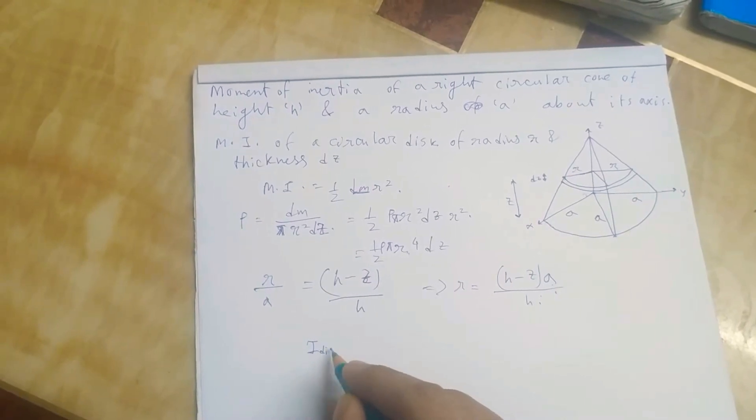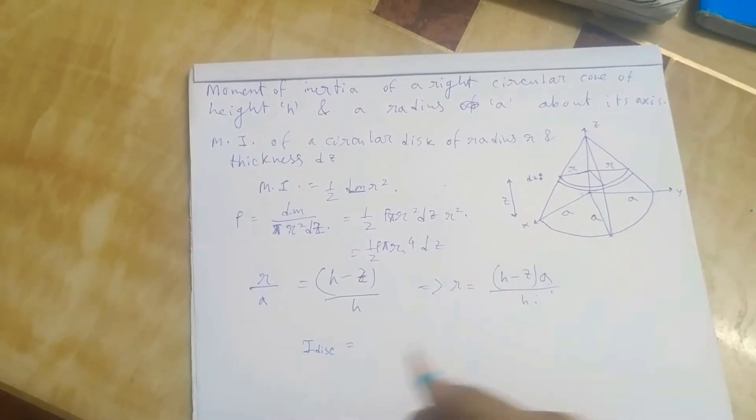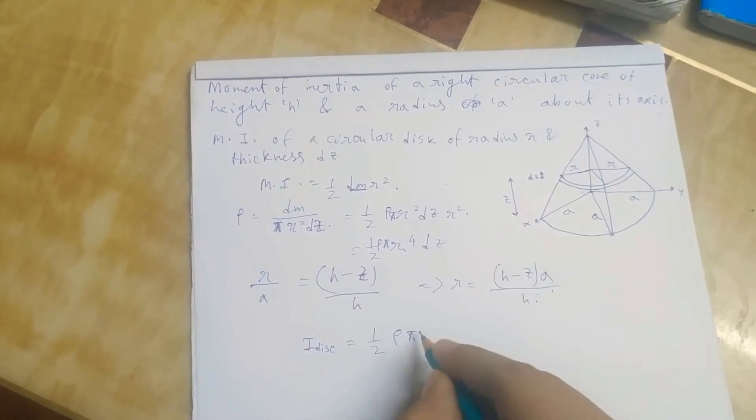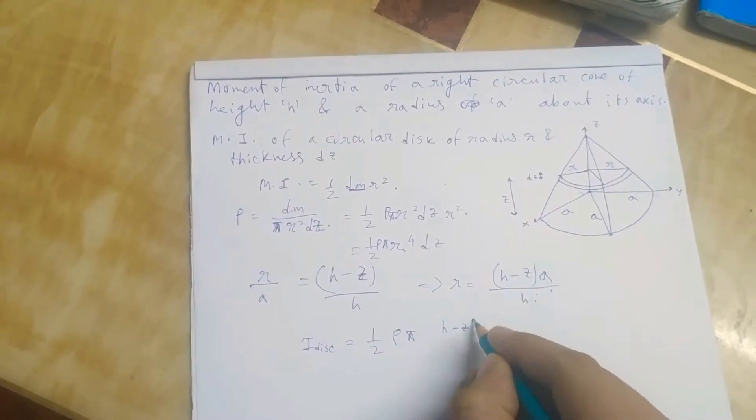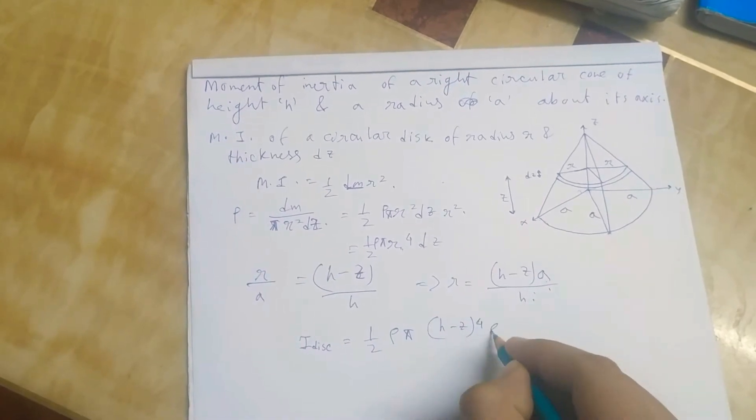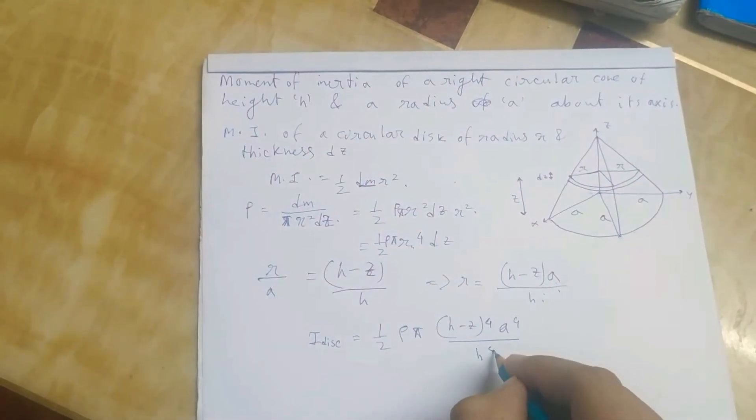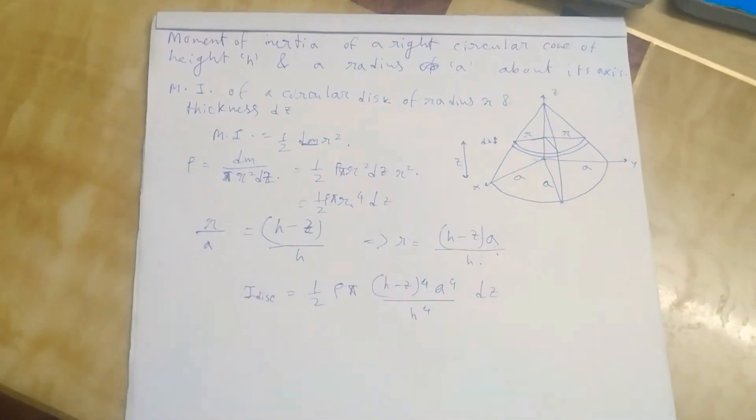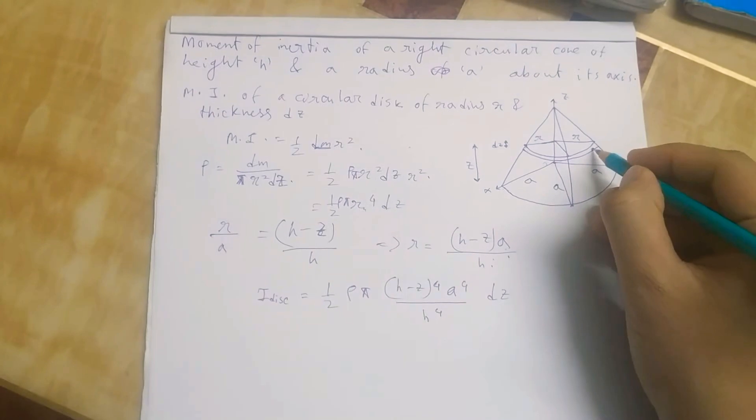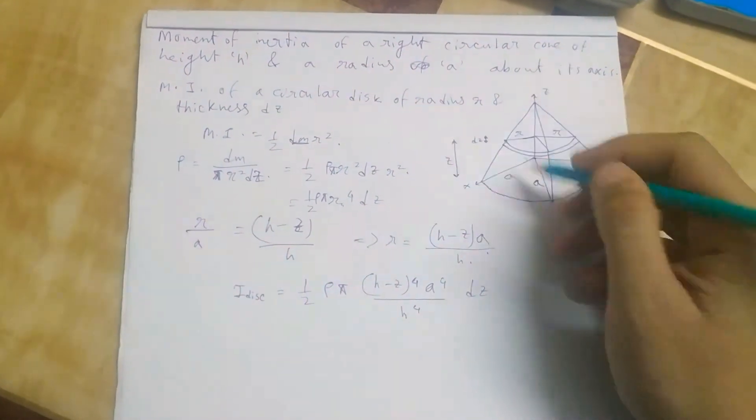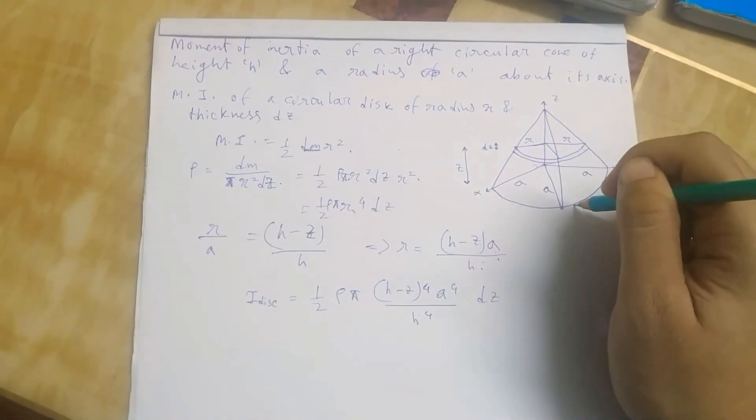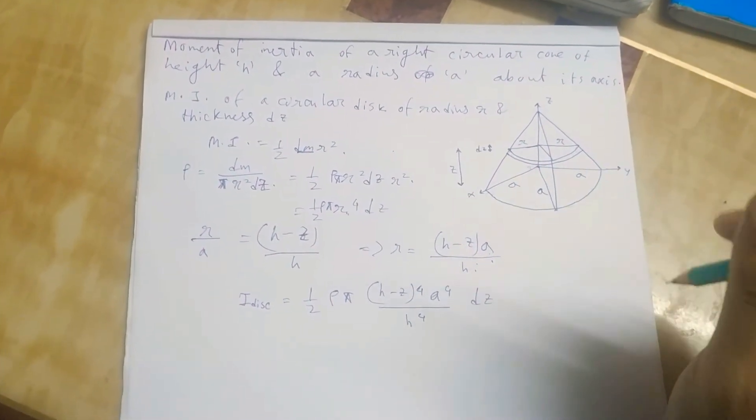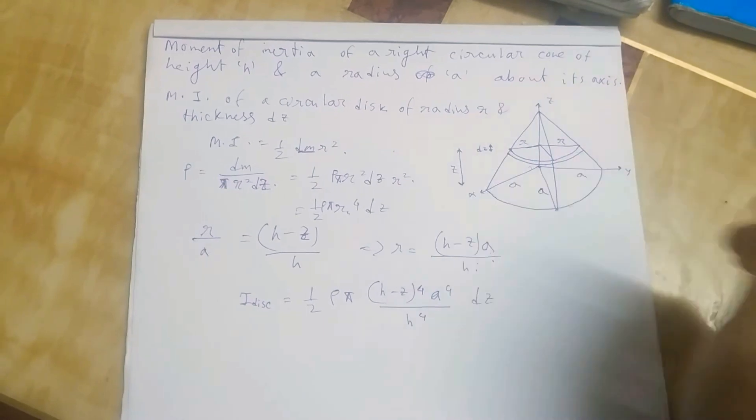Now if we substitute this value in here, we'll get it as h minus z and h minus z and h minus z. If I integrate this for the whole height, we'll get this cone and we'll get the moment of inertia for this cone about the rotation of this axis.